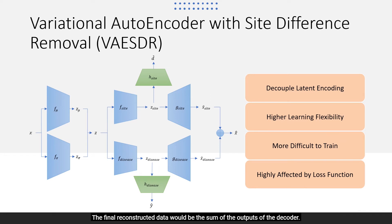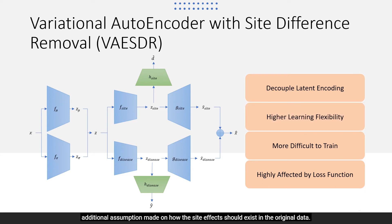Two decoders are then used to decode the site information and the disease information respectively, and the final reconstructed data is the sum of the outputs of the decoders. This method of removing site effects allows higher learning flexibility as there is no additional assumption made on how the site effects should exist in the original data. However, this also makes the training more difficult and highly affected by the loss function.